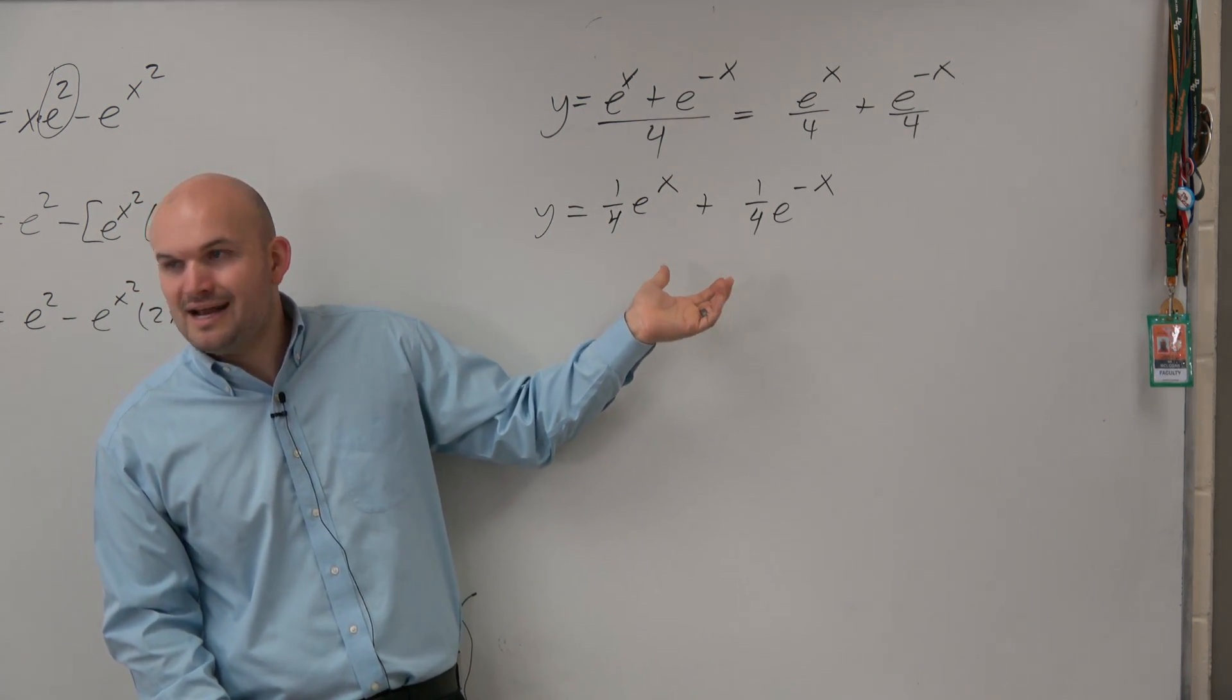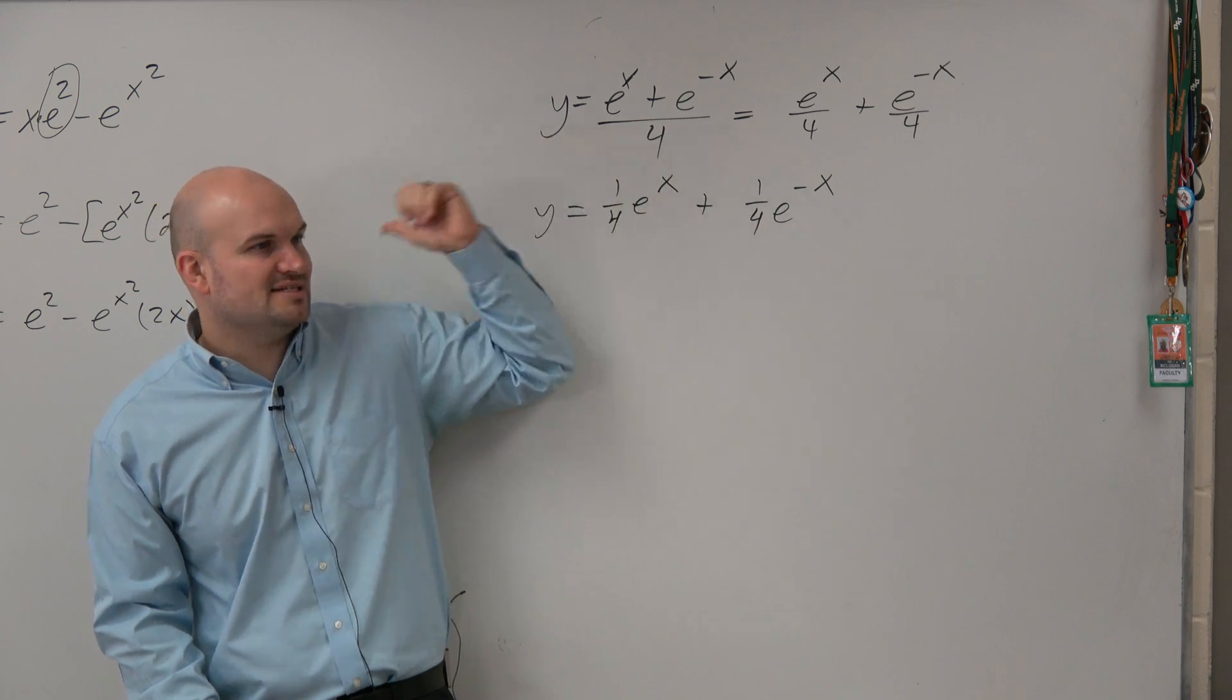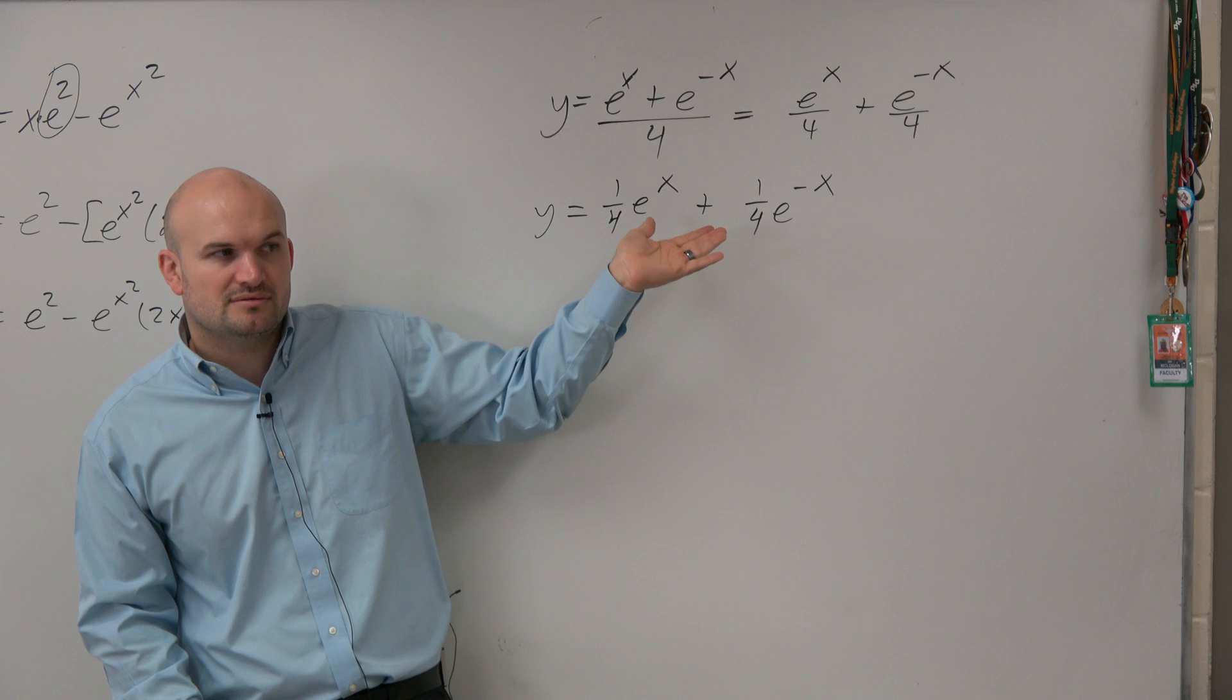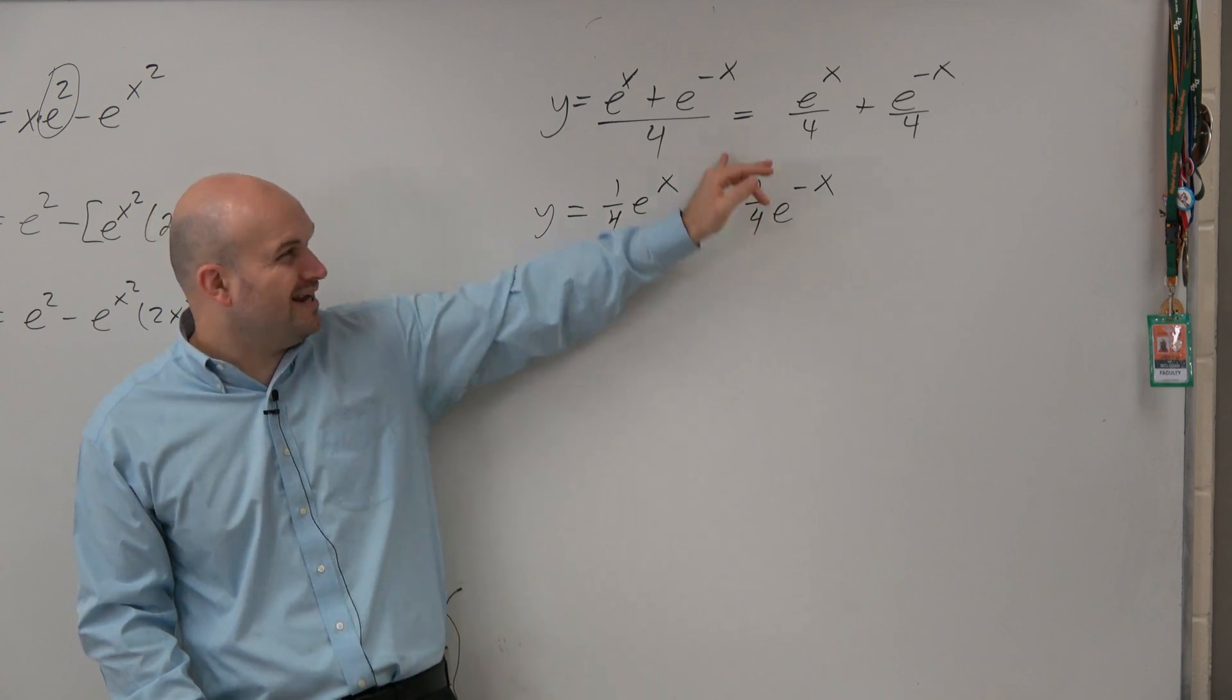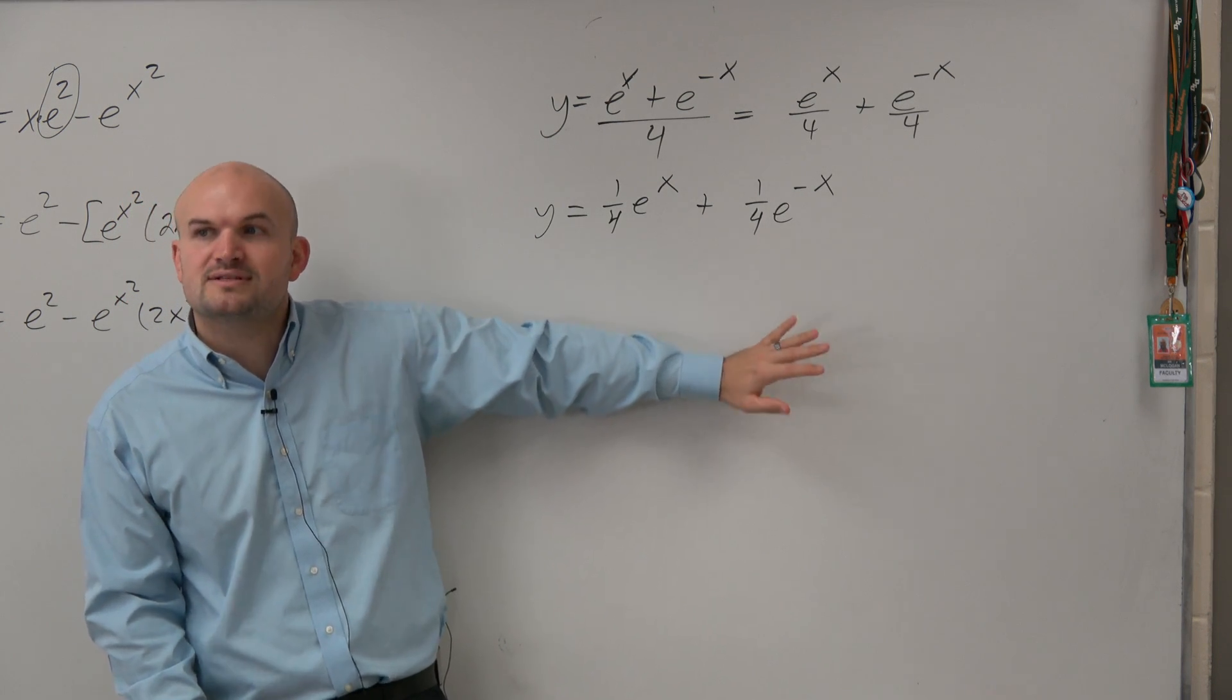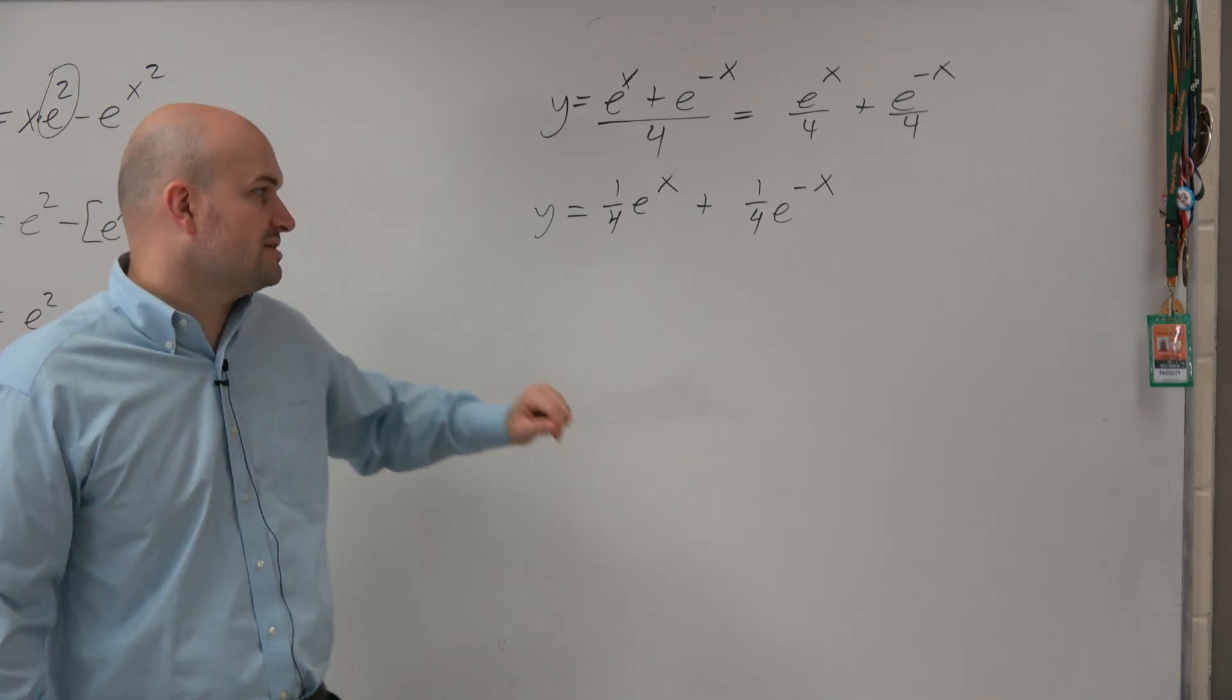When I have a constant, I know now that constant, I can just take that out and take the derivative of my function. So this constant really isn't messing everything up. But I don't want to do the quotient rule with this. So always look. Always, always, always look to simplify before taking the derivative.